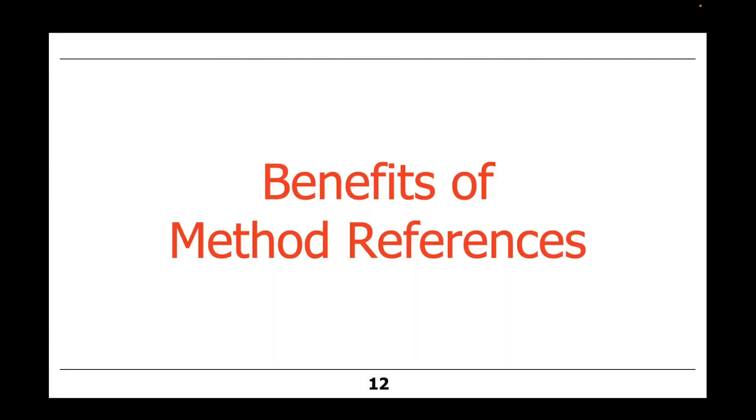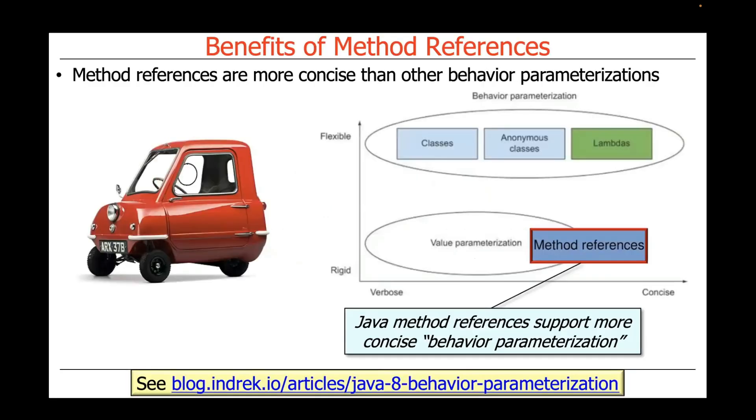Let's now turn our attention to the benefits of method references. The key benefit of a method reference in Java is it's more concise than other forms of behavior parameterization that Java supports. In particular, we talked earlier about Java Lambda expressions, which are flexible but not as concise as we saw when we were looking at the different kinds of method references. And we'll talk about the benefits and drawbacks with these approaches as we go through these other parts of the lessons.